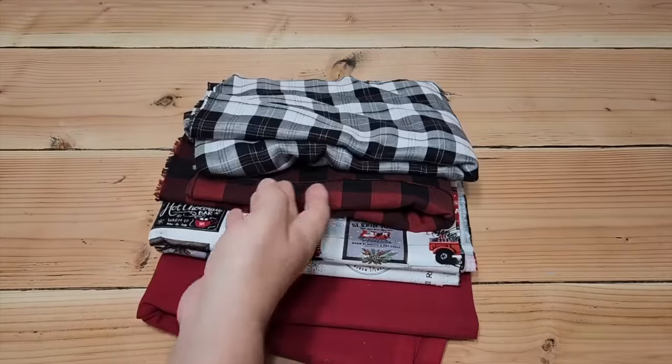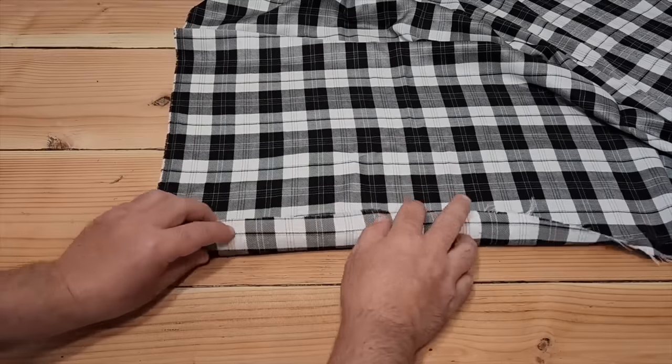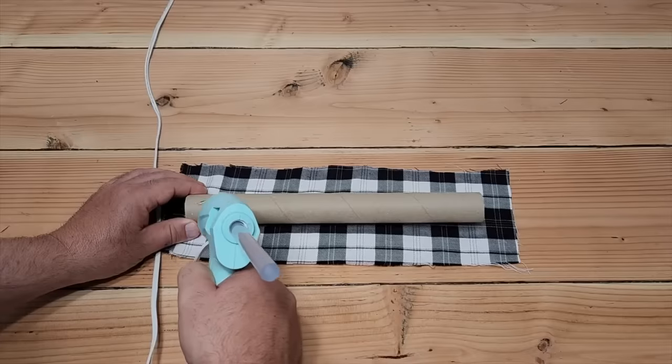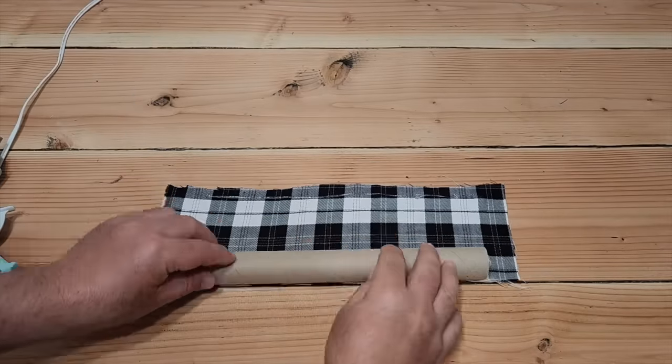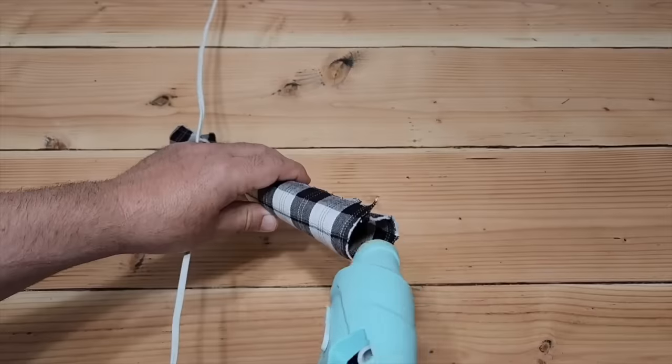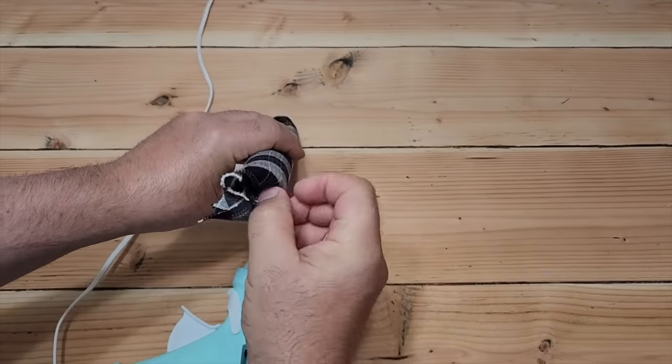Next we're going to grab some fabric. This fabric is going to roll over the tube. Once you get that cut out, run you a bead of hot glue down the cardboard tube. Roll the tube right into place. On the outside, just put a bead of glue and just start tucking it in.